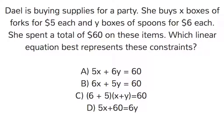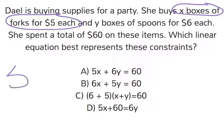It says here, Dale is buying supplies for a party. She buys X boxes of forks for $5 each. So there needs to be a 5 and an X because it's $5 for every box of forks and Y